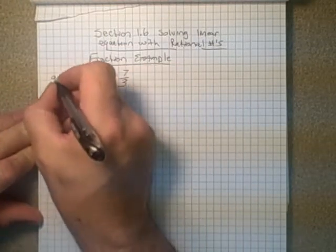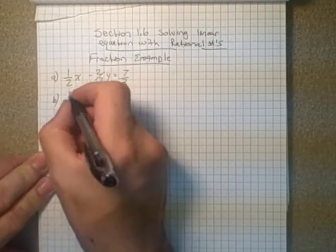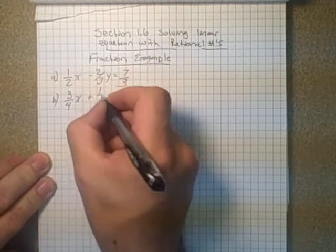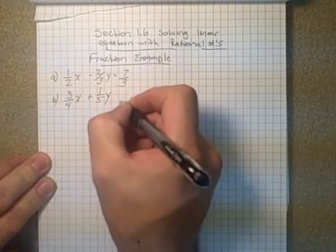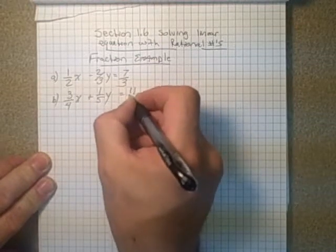That's going to be equation A. And then B will be three-quarters x plus a fifth y is equal to eleven over ten.